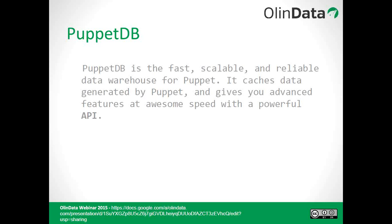PostgreSQL is the only database supported by PuppetDB, and it stores all the Puppet information like facts, catalogs, and everything. The data can be queried and whatever is run — like reports, facts — all of it can be found in the PostgreSQL database. This helps make Puppet very scalable and reliable. When you are using thousands and thousands of servers in Puppet, this can help make it faster.